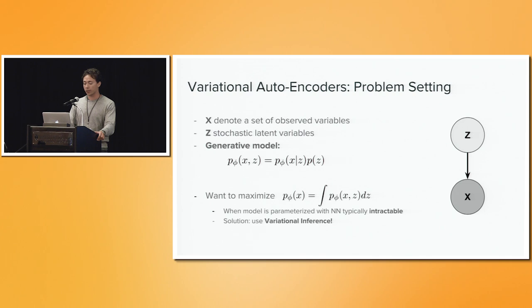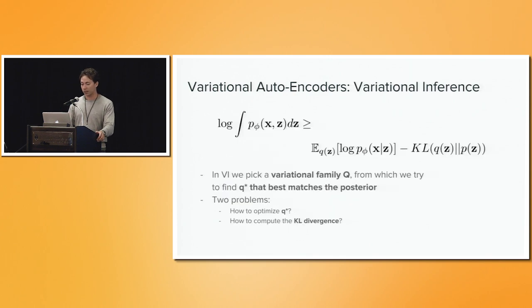The problem arises when this model is parameterized with neural networks, because this problem typically becomes intractable. So one way of going around solving this is using variational inference. A lot has been said in the previous two talks about this, so I'll try and keep it as brief as possible.